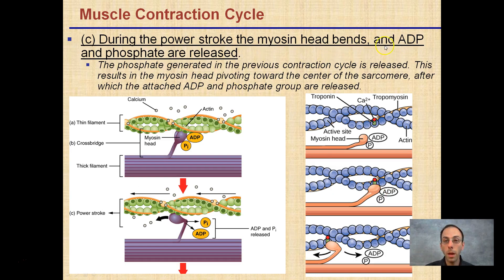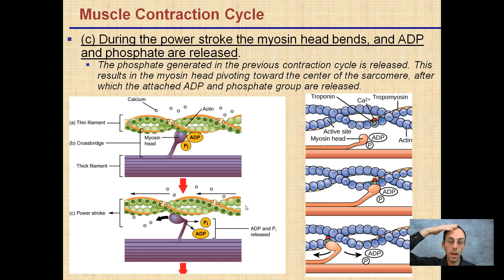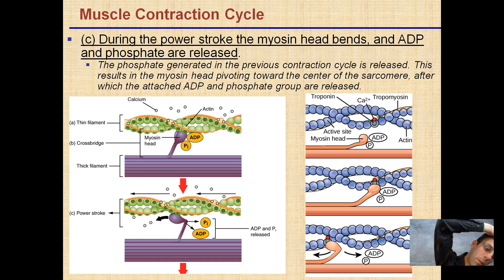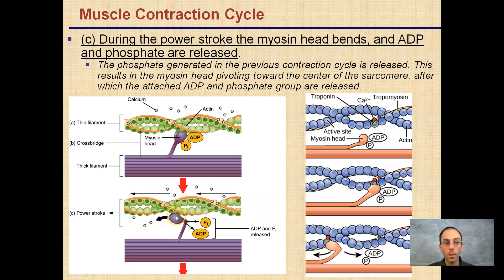During the power stroke, the myosin head bends and ADP and phosphate are released. The phosphate, generated in the previous contraction cycle, is released. This results in the myosin pivoting towards the center of the sarcomere. Think of the myosin head binding to the actin and then bending — that movement is what causes the sliding motion. This is the power stroke: the crossbridge is made, myosin binds to actin and moves, causing the filaments to slide against one another.